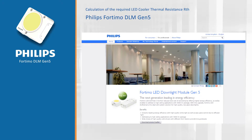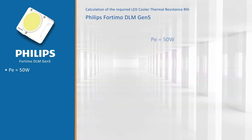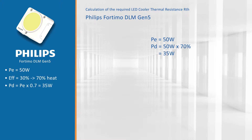When we look at the datasheet of the Fortimo DLM5000 on the Philips website, we see that this module has an electrical power of 50 watts. We're going to use the 4000 Kelvin version. There is an efficiency of about 30% for this LED module, which means that 70% goes to heat, so we have to dissipate 35 watts of heat away.